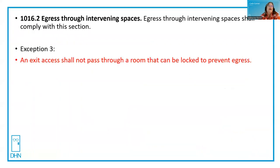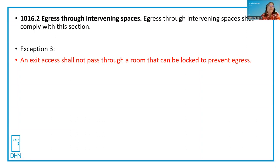Let's take a look first at egress through intervening spaces. This is from IBC 2018 — other editions are similar, so please make sure to consult your local or state code. Egress through intervening spaces shall comply with this section, and there are several exceptions. I want to focus on just one today. Exception number three says an exit access shall not pass through a room that can be locked to prevent egress.